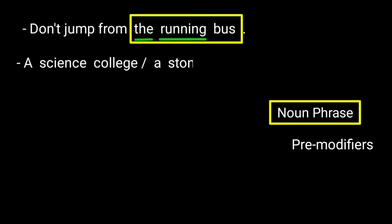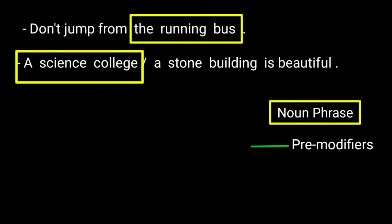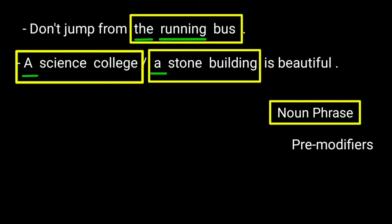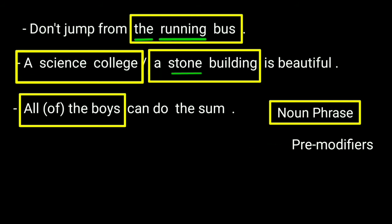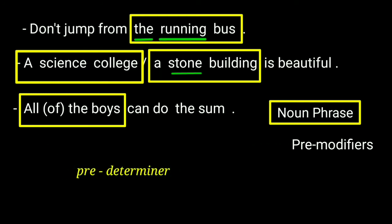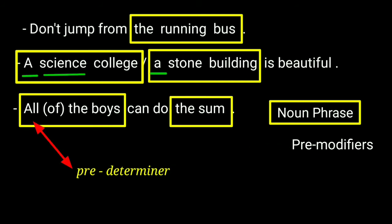A science college or a stone building is beautiful. 'A science college' and 'a stone building' are noun phrases. In each, 'a' is the article and 'science'/'stone' are classifiers — nouns working as pre-modifiers. All the boys can do the sum. 'All the boys' is a noun phrase with head noun 'boys'. 'The' is a determiner and 'all' is a pre-modifier placed before the determiner. 'The sum' is another noun phrase.